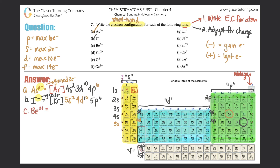C: Be²⁺. Just pretend it's beryllium — it's number 4. The noble gas before it is helium, but since it's so small, I'll write the full electron configuration starting from hydrogen: 1s2, then 2s2. Now adjust for the charge: plus 2 means I lost 2 electrons. You always lose from the largest principal quantum number — between 1 and 2, you lose from 2. Those 2 electrons go bye-bye, so the whole 2s subshell is gone. Beryllium 2+ is just 1s2, which is the same as helium.